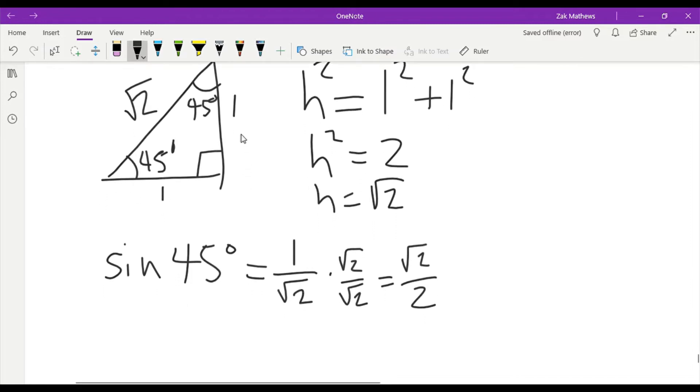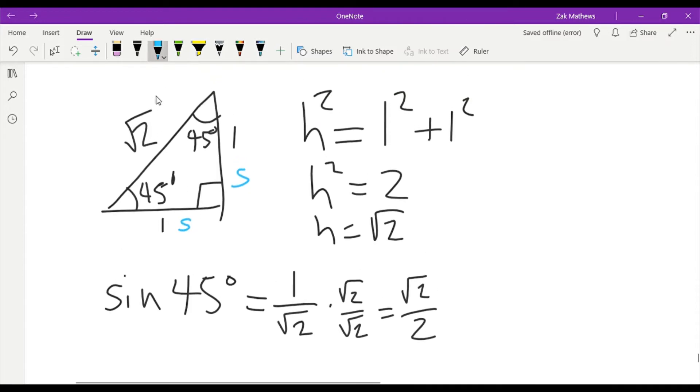Now I kind of arbitrarily chose that one at the start. So how do I know that sine of 45 is always going to be equal to this root two over two? What if the sides had been different? I chose it to be a one but what if it's instead say a five? Well this would mean this side would be a five and we need to figure out that hypotenuse again.